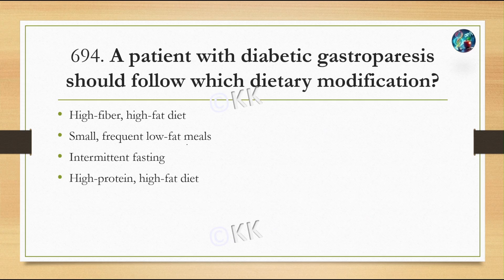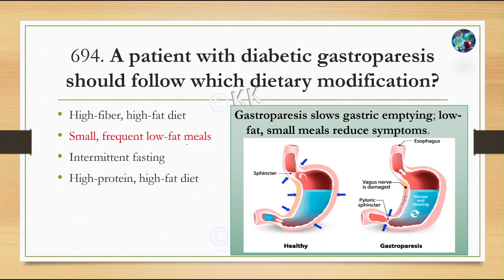Next question. A patient with diabetic gastroparesis should follow which dietary modification? Option A: high fiber high fat diet. Option B: small frequent low fat meals. Option C: intermittent fasting. Option D: high protein high fat diet. The correct option is B — small frequent low fat meals. Gastroparesis slows gastric emptying, and low fat, small meals can reduce these symptoms.